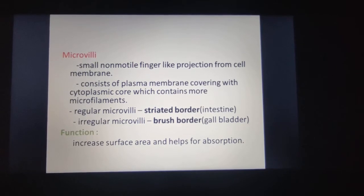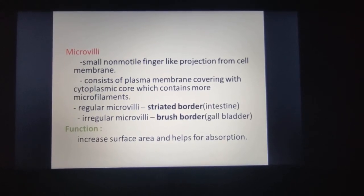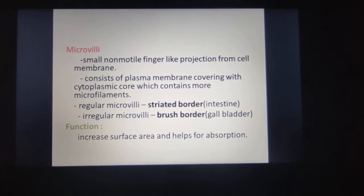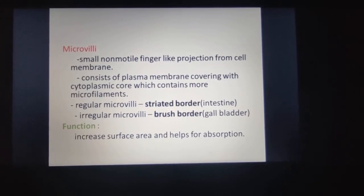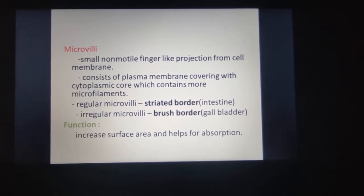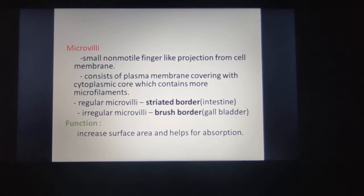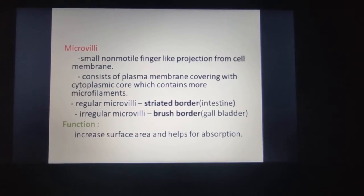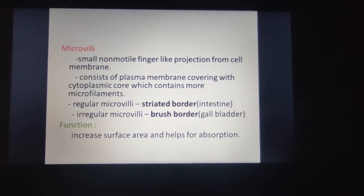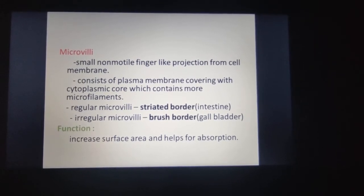Microvilli are small non-motile finger-like projections from the cell membrane. Regular microvilli have a striated border, seen in the intestine. Irregular microvilli have a brush border, seen in the gallbladder. Their function is to increase the surface area and help with absorption.